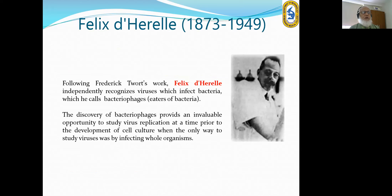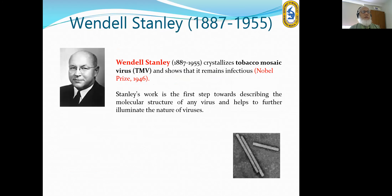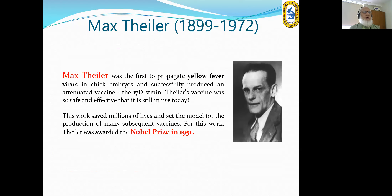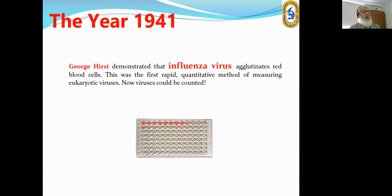Felix D'Herelle independently showed the discovery of bacteriophages. Wendell Stanley crystallized the tobacco mosaic virus and showed that it remained infectious, receiving the Nobel Prize in 1946. Max Theiler was the first to propagate yellow fever virus in chicken embryo and successfully produced an attenuated vaccine, receiving the Nobel Prize in 1951. In 1941, George Hirst demonstrated that influenza virus agglutinates red blood cells — this was the first rapid quantitative method of measuring viruses.